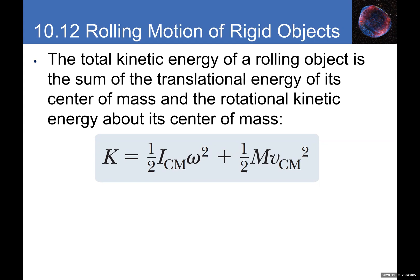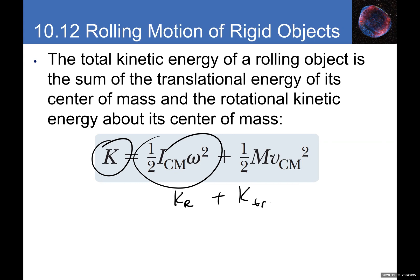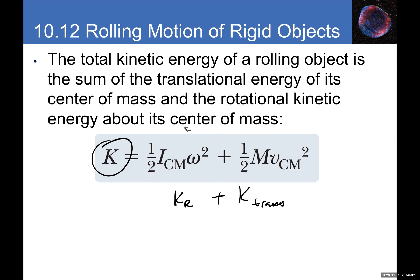For a rolling object — sphere, disc, or cylinder — the total kinetic energy is the sum of rotational and translational kinetic energies: KE_total = ½I_cm ω² + ½mv_cm². If the object is just sliding, the rotational term is zero. If it's just rotating without translating, the translational term is zero. For rolling, both terms contribute.